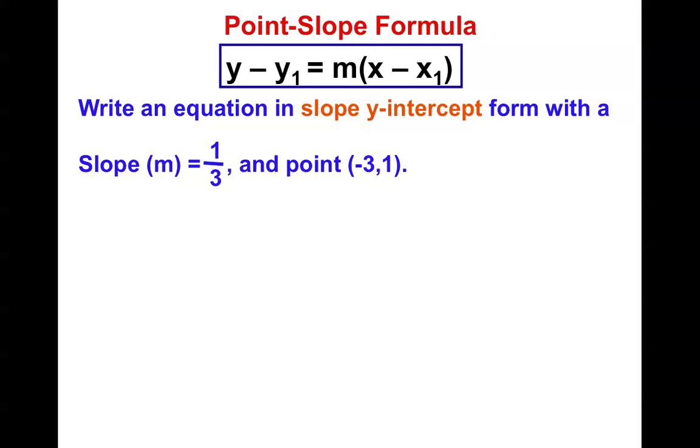All right. All right. You guys, try to write an equation in slope y-intercept form. Step 1. Pick a point to be x1. Pick a point to be y1. So, notice x1 goes here at 3. Minus negative 3 becomes plus positive 3. And minus 1 becomes plus negative 1. Our slope is 1 third, and so there we go.